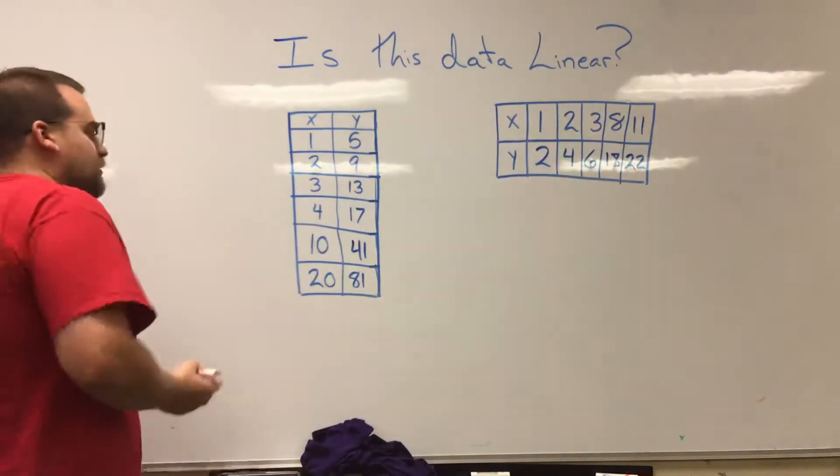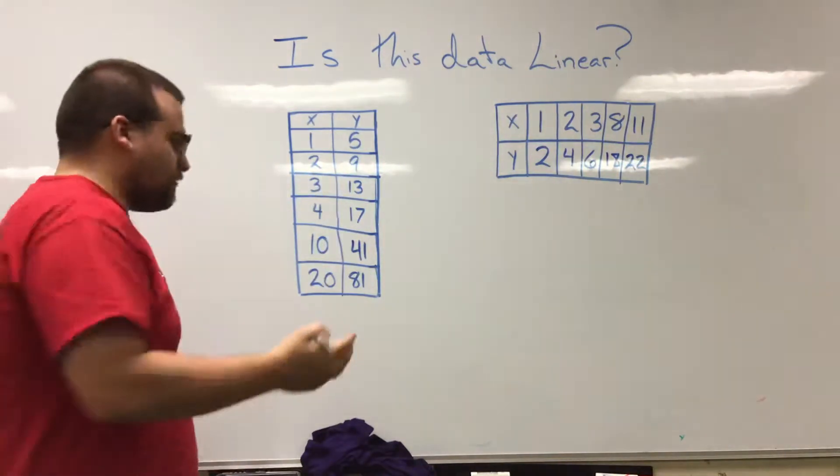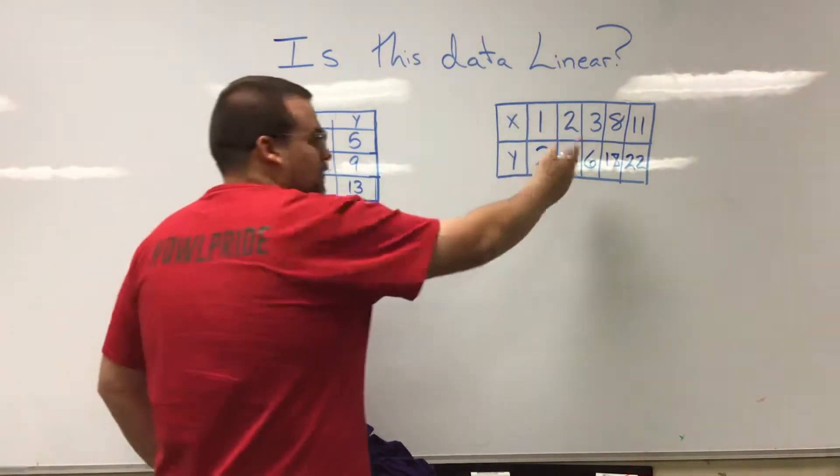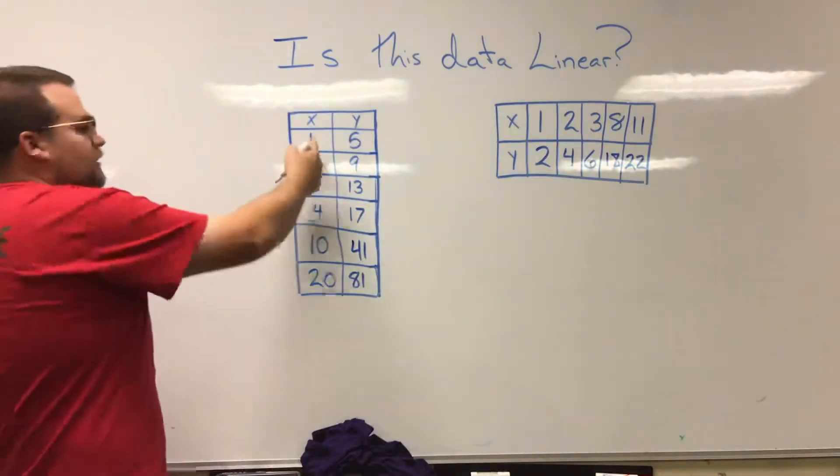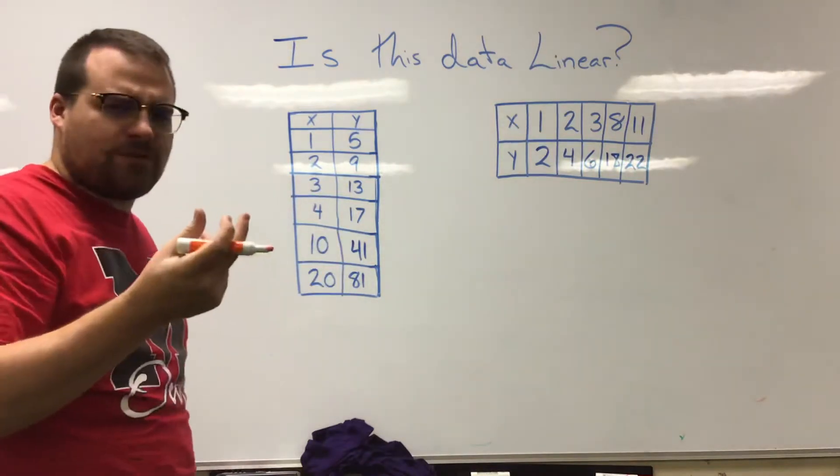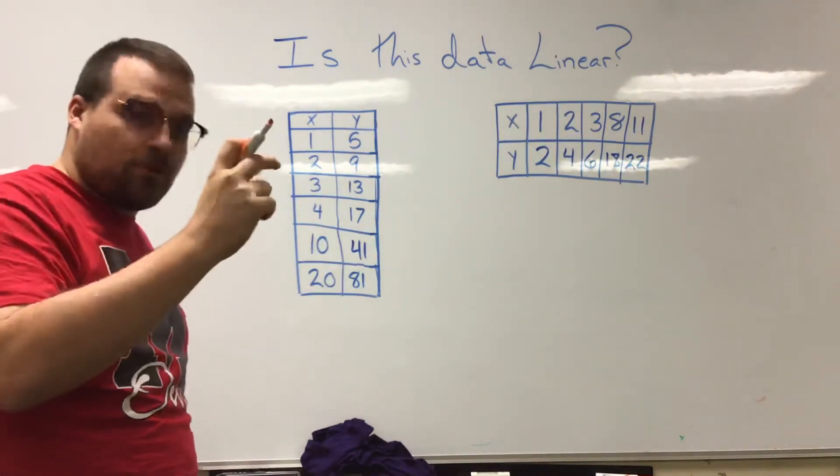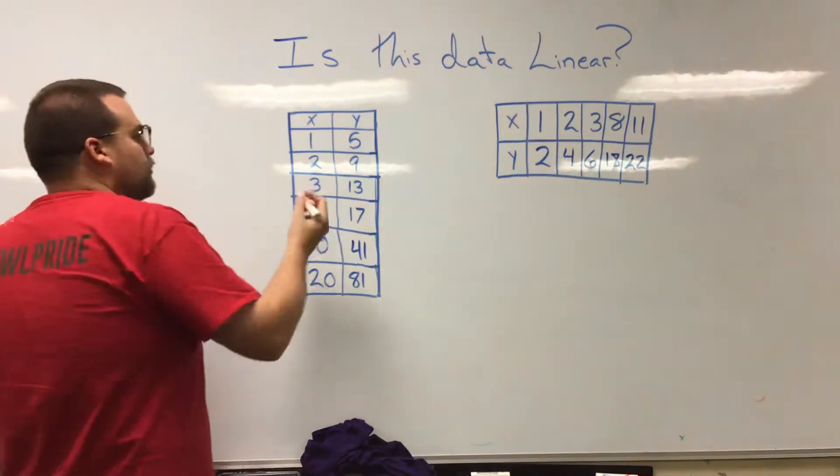So here's what I like to do. I like to look at my numbers that are just going up by one. Now typically in a data set we have some numbers that are a little larger, maybe some gaps. I want to look at these numbers that are just going up by one each time. See how much difference is there in my outputs whenever my input is just going up by one.